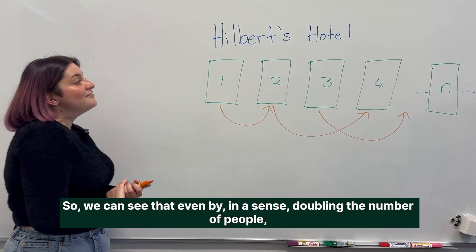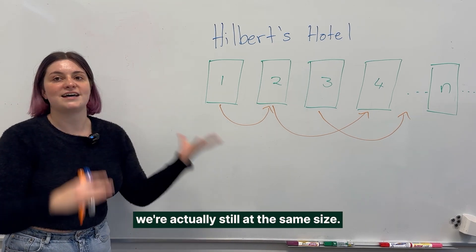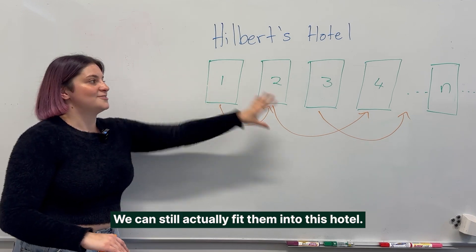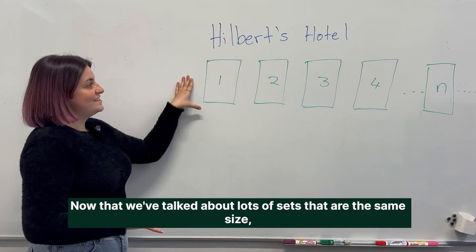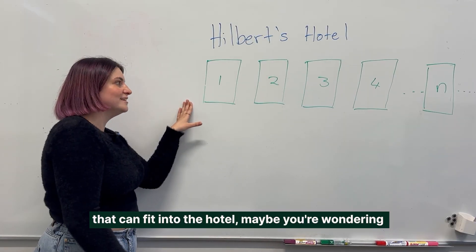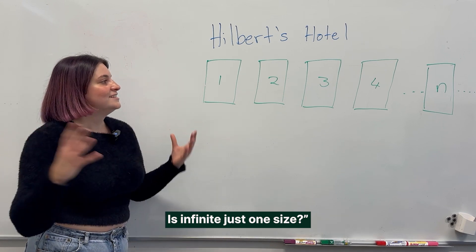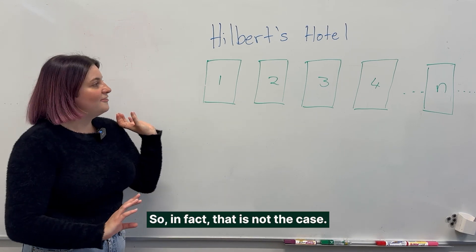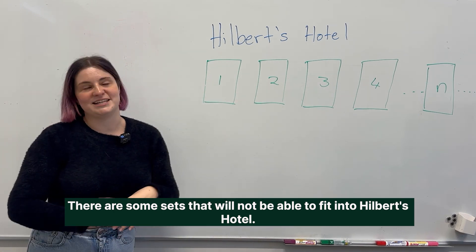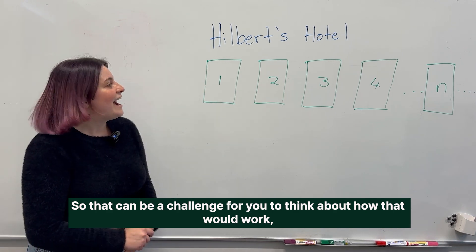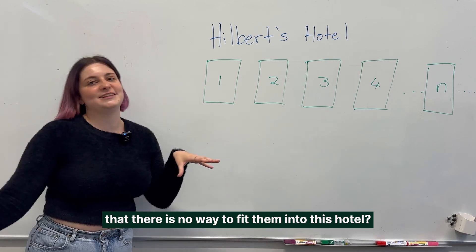So we can see that even by doubling the number of people we're still at the same size — we can still fit everyone into the hotel. Now that we've talked about many sets that are the same size and fit into the hotel, you might wonder: is there only one notion of size for infinity? In fact, that is not the case — there are some sets that will not be able to fit into Hilbert's Hotel. That can be a challenge left to you to think about how that would work, and how you would go about proving that there is no way to fit them in.